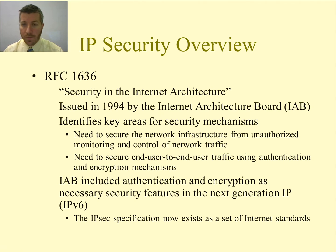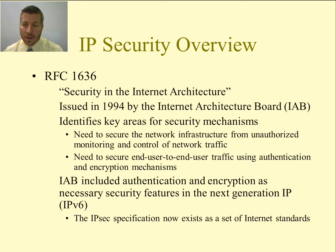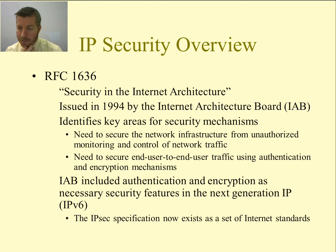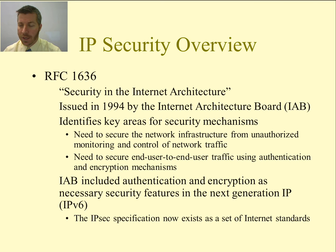An overview of what IP security is: it was defined in RFC 1636, titled Security in the Internet Architecture. It was issued in 1994 by the Internet Architecture Board, and it identifies the key areas for security mechanisms — the need to secure the network infrastructure from unauthorized monitoring and control of network traffic, and the need to secure end-user to end-user traffic using authentication and encryption mechanisms.